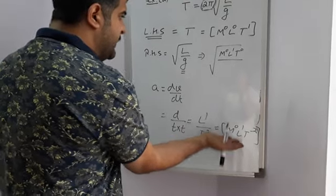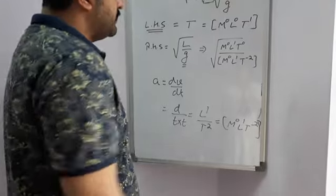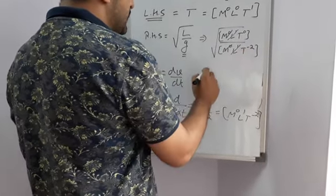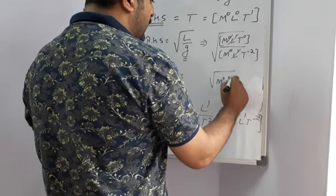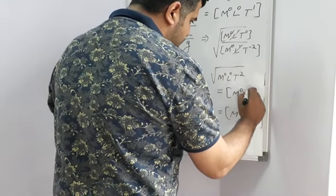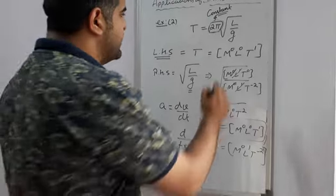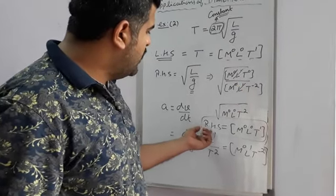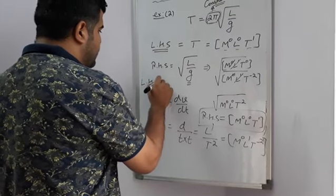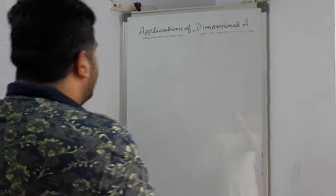Putting these dimensions into the expression: L/G gives M⁰L¹T⁰ divided by M⁰L¹T⁻², which simplifies to M⁰L⁰T². Taking the square root gives M⁰L⁰T¹. The dimensional formula of the left hand side is M⁰L⁰T¹ and the right hand side is also M⁰L⁰T¹. So LHS equals RHS, and this formula is also dimensionally correct.